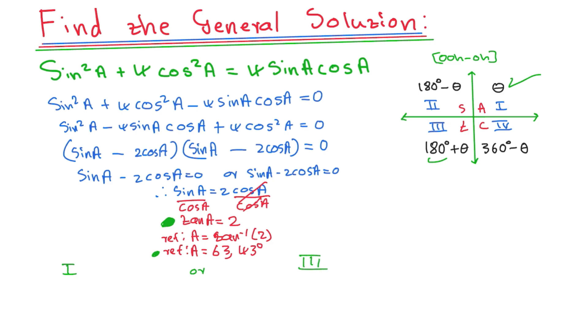In the first quadrant, what do we have? We're going to say A is equal to what? We take the reference angle as it is, and we're going to say 63.43 degrees. Then you say plus k, 180 degrees, where k is the element of integers. Remember, for tan, k is always multiplied by 180.